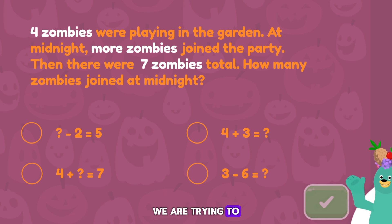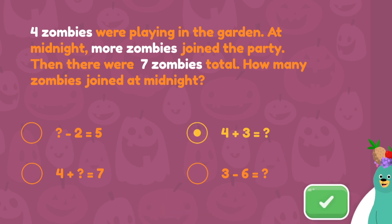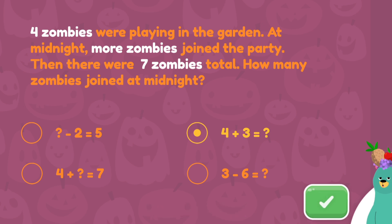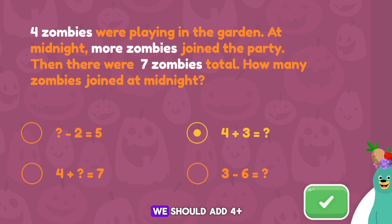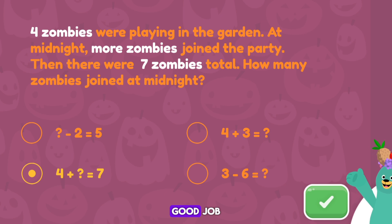We are trying to find out how many zombies joined at midnight. Which equation matches the word problem? Four plus three equals blank. Oops! Remember, the word total means we should add. Four plus blank equals seven. Good job!